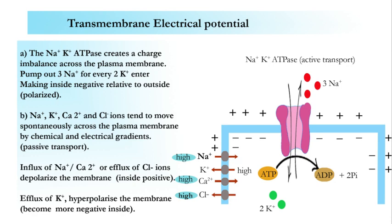Let's talk about transmembrane electrical potential. The sodium-potassium ATPase creates a charge imbalance across the plasma membrane. As shown in the figure, it pumps out three sodium ions and pumps in two potassium ions. This is an example of active transport, where ATP is converted into ADP and inorganic phosphate. Three sodium ions pumping out means three positive charges going out; two potassium ions pumping in means two positive charges coming in. In summary, three minus two equals one positive charge going out, making the inside negative relative to outside. The membrane is said to be polarized — positive outside, negative inside.